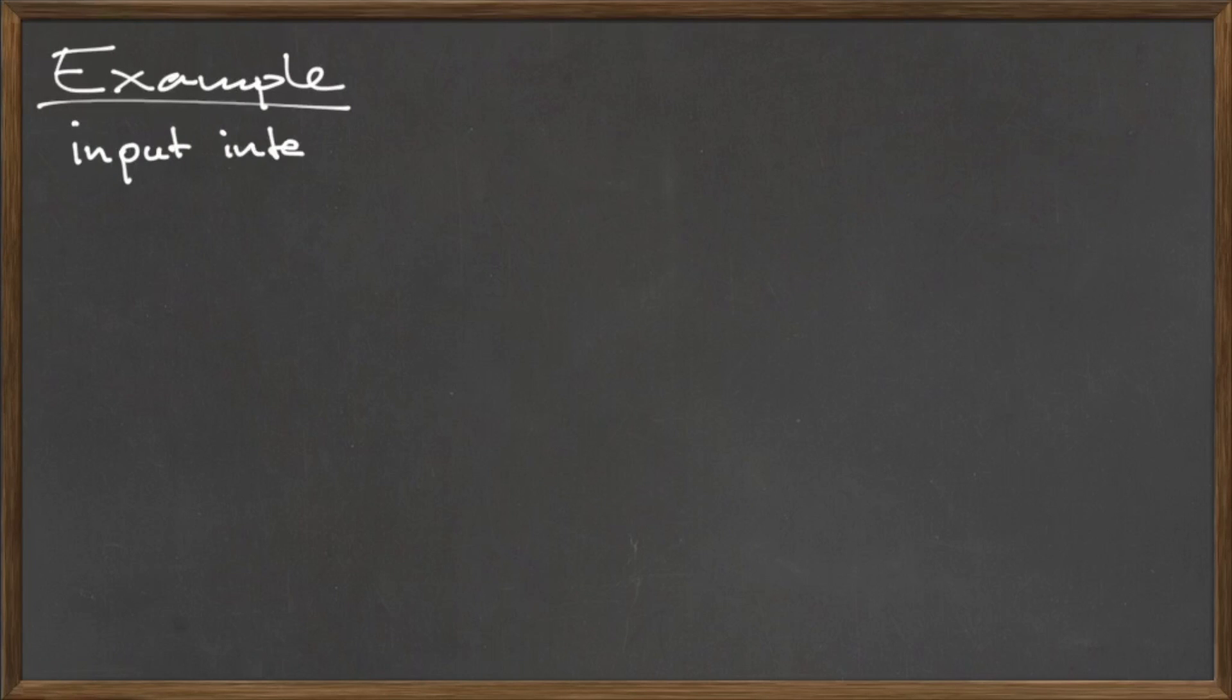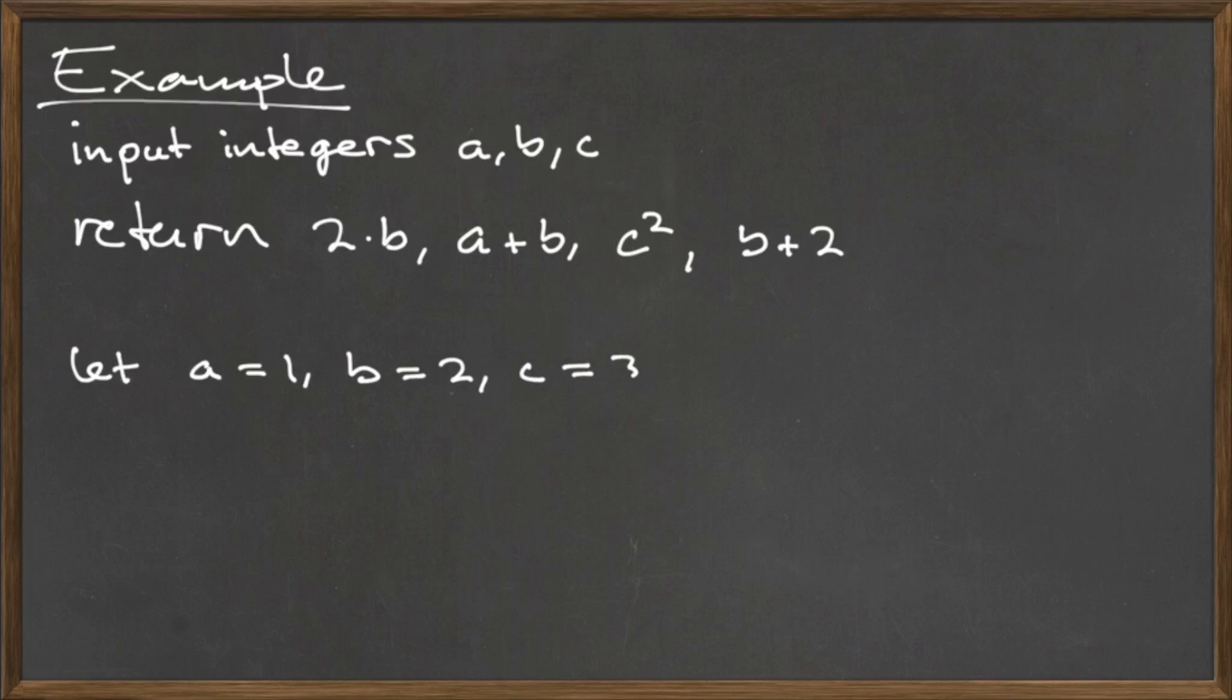Here's an example to try on your own. This algorithm accepts the integers a, b, and c as input, and returns the numbers 2 times b, a plus b, c squared, and b plus two as outputs.